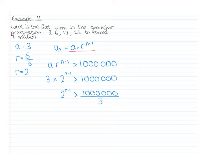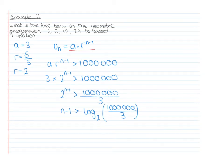Now we need to use our laws of logarithms, converting from index form to log form. So N minus 1 is greater than log to the base 2 of 1 million over 3. We get that N minus 1 is greater than 18.34.